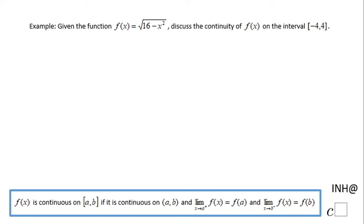Welcome back to Math Help at C Squared. In this example, we have a function given f(x) = √(16 - x²).